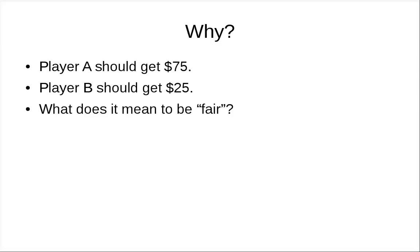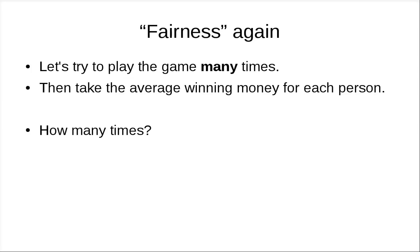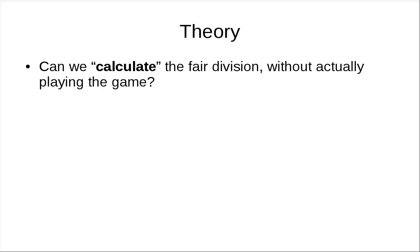Player A should get $75, while Player B should get $25. What does it mean to be fair? One way to talk about fairness is you can let the player play the game many times and then take the average — you get something as if you play that many times and on average what you would get. The question is how many times, if you really want to implement this procedure for fairness, do you need to do this? And can we calculate that without actually playing the game? The original question is you want to play a game and the game was interrupted, so you want to think about something that is not yet to happen.